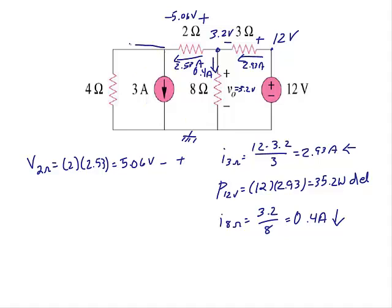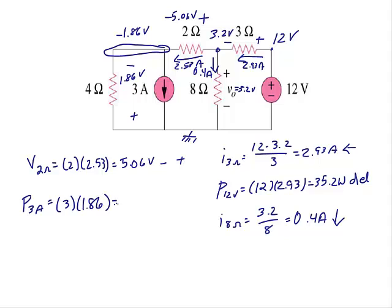Now I can use KVL to find the voltage across the 3-amp current source. If I have a 3-volt rise and a 5.06-volt drop, then in order to obey KVL that middle loop has negative 1.86 volts at this node — negative on top, positive on the bottom, 1.86 volts. Now that I have the voltage, I can find the power for the 3-amp current source: 3 times 1.86, which is equal to 5.6 watts delivered. This concludes our first source transformation example.